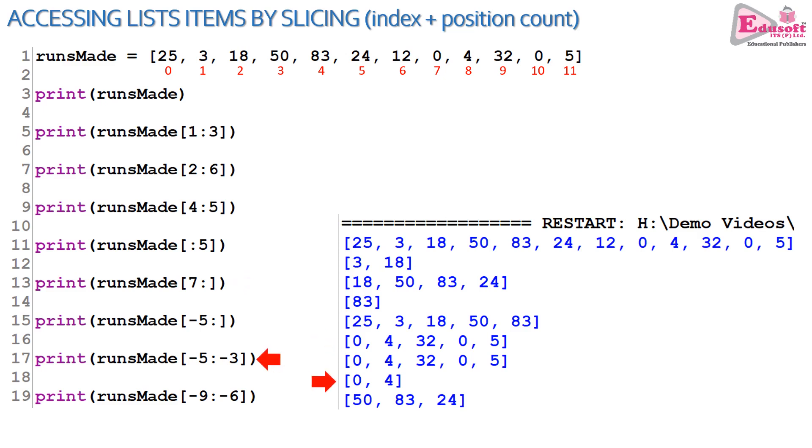Now lists can be browsed in reverse also. When we talk about reversing, if I say line 17, minus 5 is the index, minus 3 from the right hand side is the position. Hence the output 0, 4. Similarly for minus 9 and minus 6. Always remember when you are counting in reverse, you have to mention the values with a minus sign, that is negative. And if you are counting from reverse, the first value before colon is the position or count from the right hand side, and the second value after the colon is the index position from the right hand side.